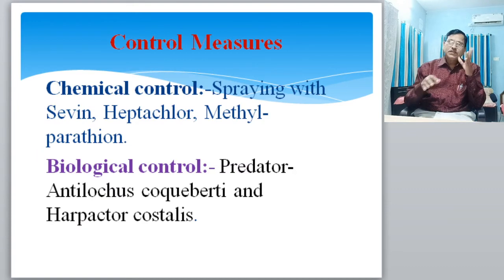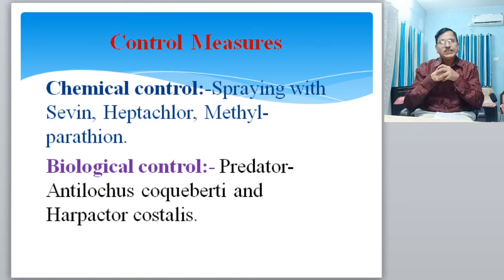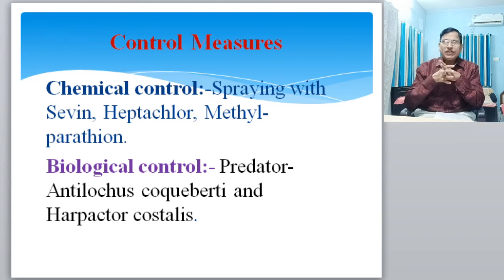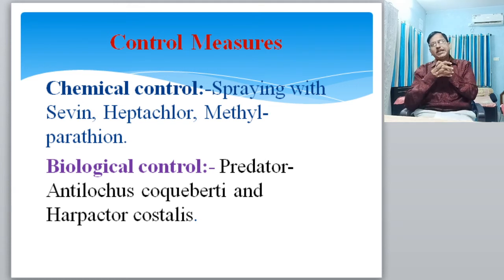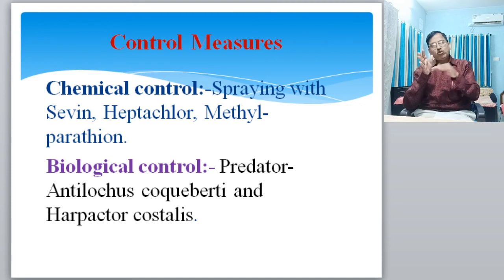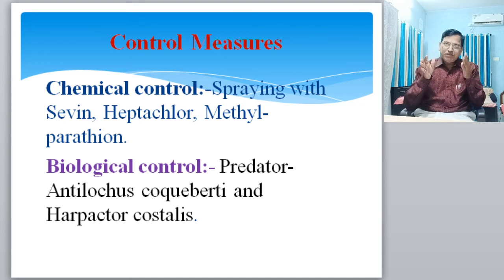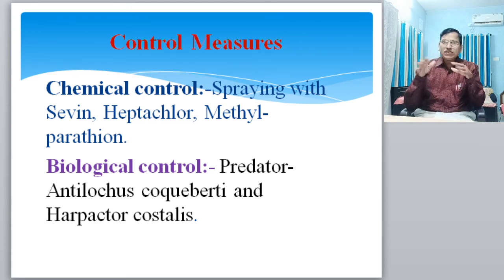The second method of control is chemical control measures. In chemical control, specific pesticides or insecticides are used to control the pest population of red cotton bugs. Farmers spray with BHC as a specific chemical or pesticide.